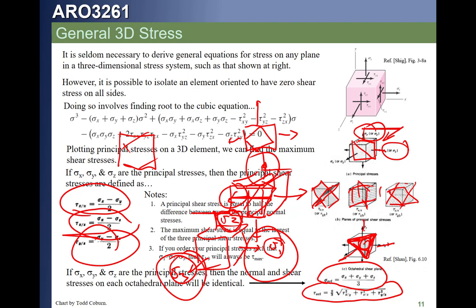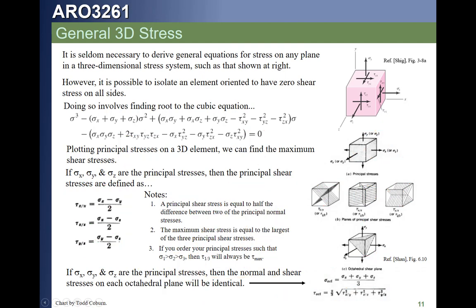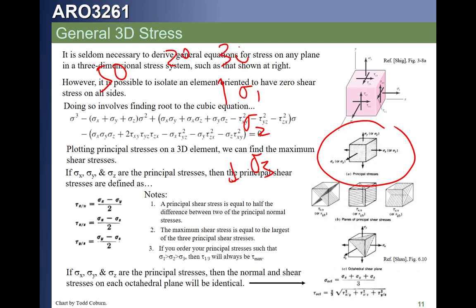We also get an octahedral shear stress on the octahedral plane — a plane that cuts across all three principal stress directions. The average stress and octahedral shear stress are given by their respective equations. The key principle: order the principal stresses sigma 1, sigma 2, sigma 3 from greatest to least, and the max shear stress is simply (sigma 1 minus sigma 3) divided by 2.